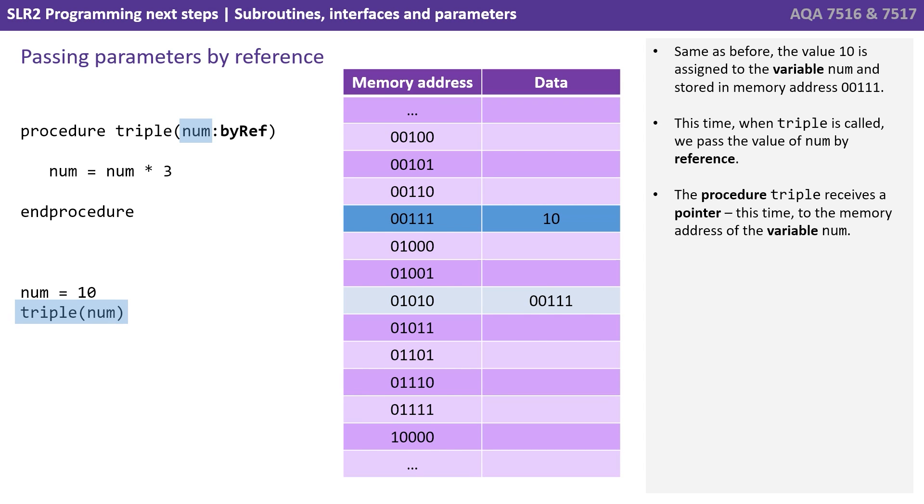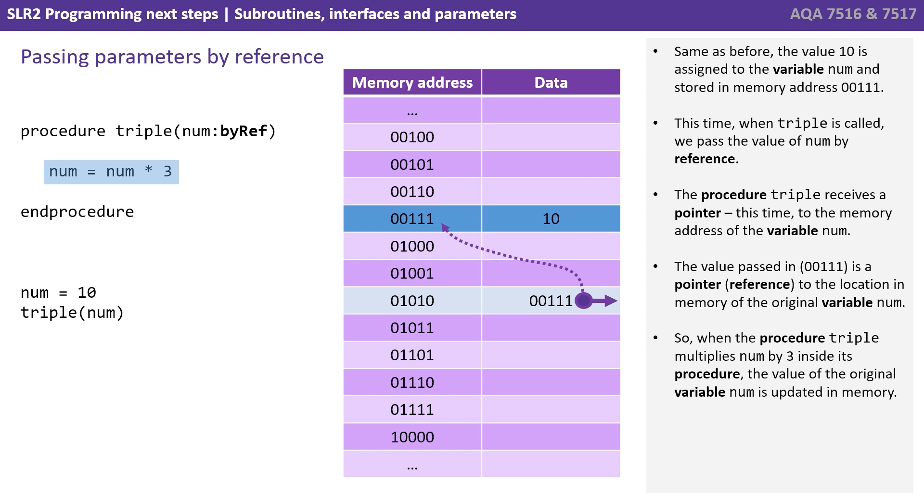This time, when triple is called, we pass the value of num by reference. The procedure triple receives a pointer, this time to the memory address of the variable num. The value passed in 00111 is a pointer or reference to the location in memory of the original variable num. So when the procedure triple multiplies num by 3 inside its procedure, the value of the original variable num is updated in memory.